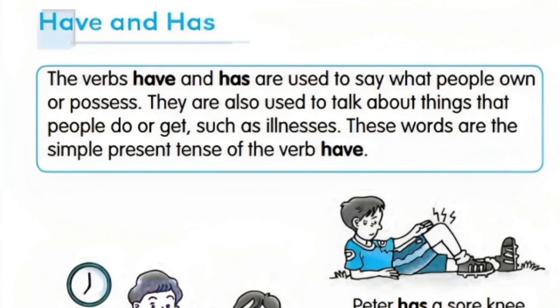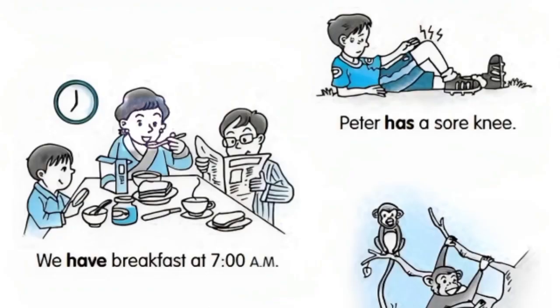Bismillahirrahmanirrahim. Has and have are used as main verbs. They show what people own, what people do, and what people get. The verbs have and has are used to say what people own or possess. They are also used to talk about things that people do or get, such as illness. These words are the simple present tense of the verb have.